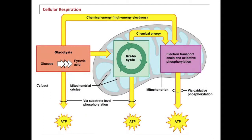Let's look at cellular respiration. This is where oxygen comes into play. Notice here — this is a mitochondria. Off to the left, we have glucose. Glucose is this six-carbon sugar — one, two, three, four, five, six — that is glucose right there.